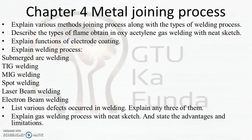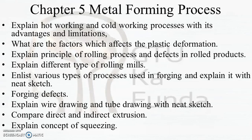Further questions for chapter four include: list various defects that occur in welding and explain three of them, explain the gas welding process with neat sketch, and state its advantages and limitations. For chapter five, Metal Forming Process, questions include: explain hot working and cold working processes with advantages and disadvantages, or they may ask for the difference between hot working and cold working.